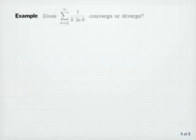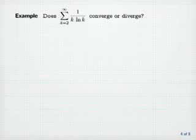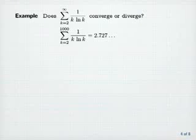Example: does the sum from k equals 2 to infinity of 1 over k times log k converge or diverge? Before we try to answer this question, let's point out that the partial sums here grow very, very slowly. In fact, the sum from k equals 2 to 1000 of 1 over k times log k is equal to 2.727, but that really tells us nothing about whether the series converges or not. So let's use the integral test.